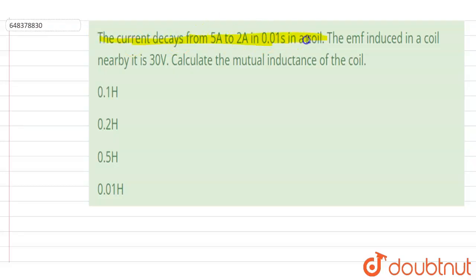5 to 2 ampere in 0.01 second in a coil. The emf induced in the coil nearby it is 30 volt. Calculate the mutual inductance of the coil.